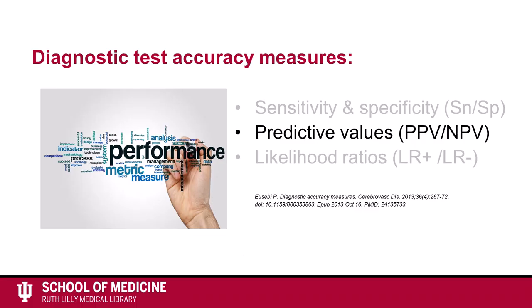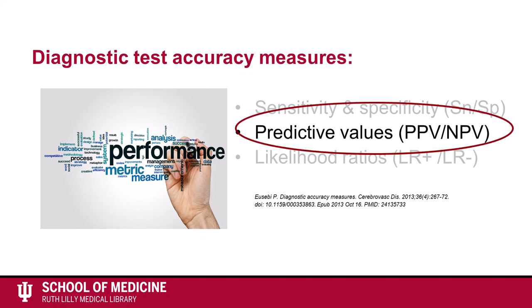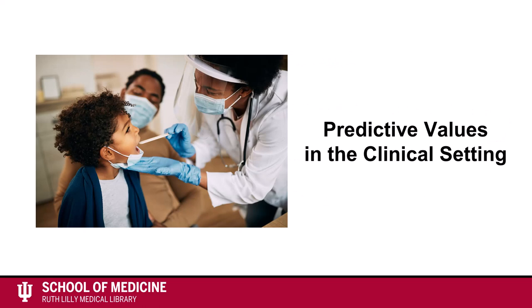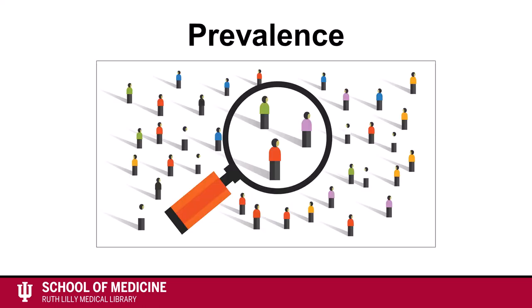Like sensitivity and specificity covered in the previous video, predictive values are a diagnostic test accuracy measure. In the clinical setting, you do not know if a patient has the disease or not. Positive predictive value, or PPV, and negative predictive value, or NPV, are directly related to prevalence and allow a provider to clinically say how likely it is that a patient has a specific disease. Prevalence is the number of people who have a disease in a set population at a single point in time, and is shown as a decimal or a percentage. Predictive values are always dependent on the prevalence of the disease.